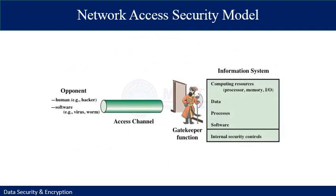The previous model can help you specify a number of security systems. However, there are other situations which do not reflect the particular mechanism represented in the previous model. This figure addresses concern for protecting information systems from unwanted access. Most of you must be familiar with concerns caused by the existence of hackers who attempt to penetrate systems.